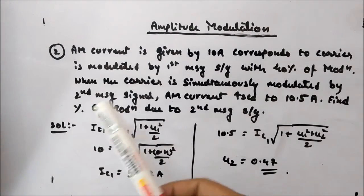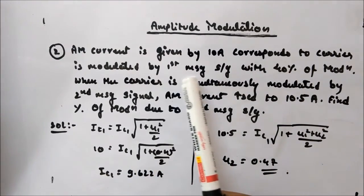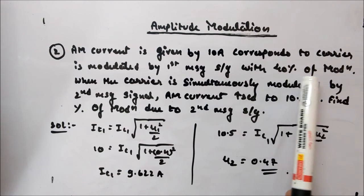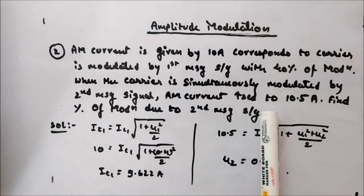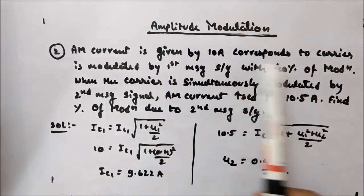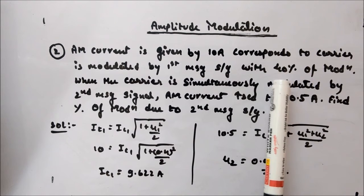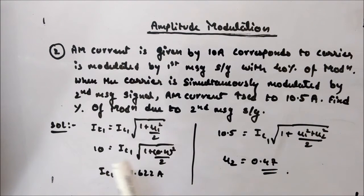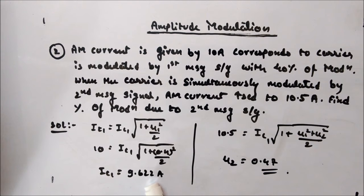Let's look at the next example. AM current is 10 A when the carrier is modulated by the 1st message signal with 40% modulation. When simultaneously modulated by a 2nd message signal, AM current increases to 10.5 A. Find the percentage of modulation due to the 2nd message signal. From the first condition, applying the current relation IT1 = IC·√(1 + mu1²/2) with IT1 = 10 A and mu1 = 0.4, you can calculate IC = 9.62 A.